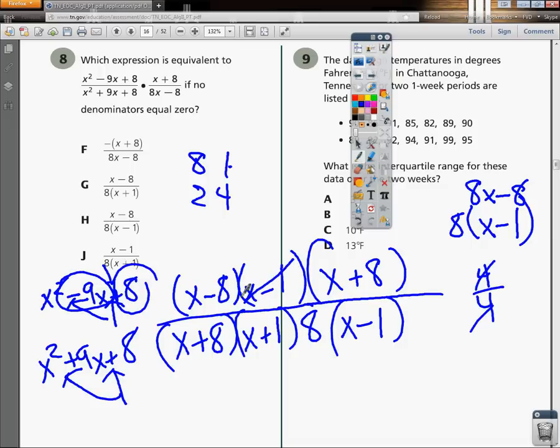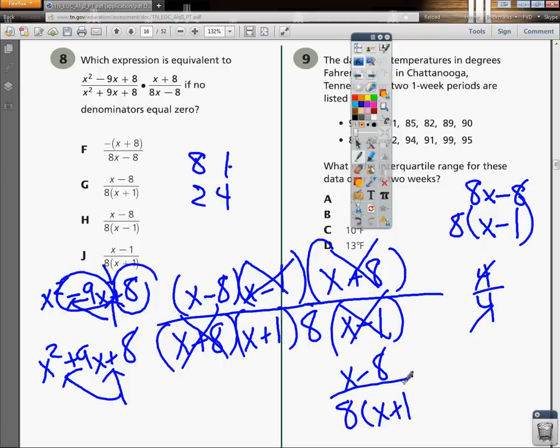Both of them have this x minus 1, so I'm going to eliminate those. Then I can see that the x plus 8 ends up on the top and bottom as well. So what I'm left with are the things that are only on the denominator or only in the numerator. And I'm just going to write them out. x minus 8 over 8 times x plus 1.